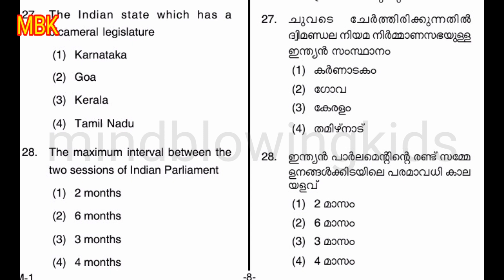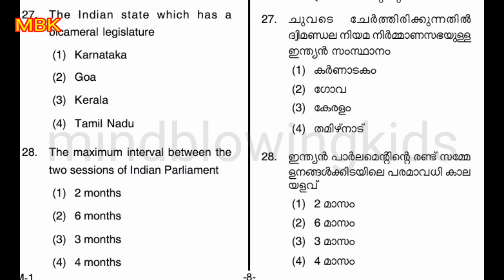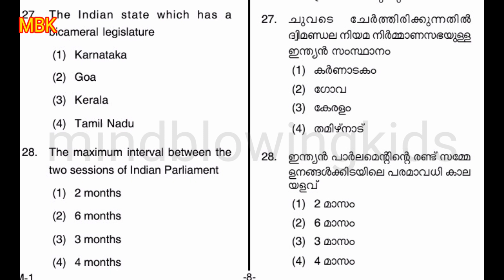The Indian state which has a bicameral legislature. Option one: Karnataka. Option two: Gujarat. Option three: Kerala. Option four: Tamil Nadu. The answer is option three — Kerala. Fourth one: 6 months.